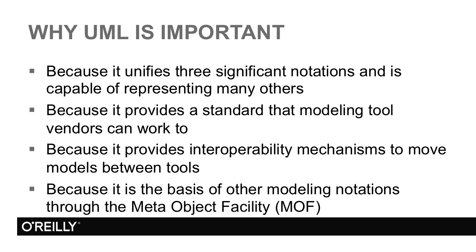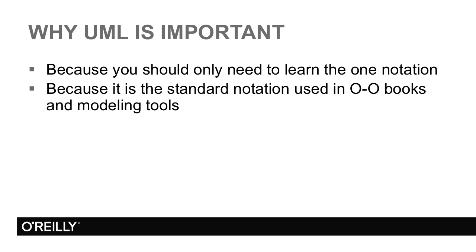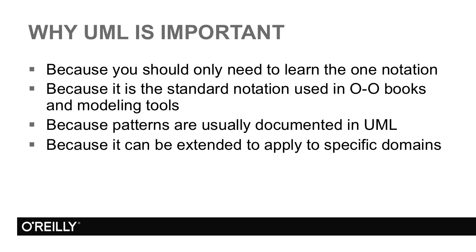UML is used to specify other standards through the Meta Object Facility. From your point of view, it should mean that you only need to learn one notation for object-oriented software development, though there are obviously others for architecture, systems engineering, or business process modelling. You'll also find that it's the standard notation used in books on other software development subjects when authors want to visualise classes or other object-oriented concepts. Design patterns are usually documented in UML, and most books on the subject use it. And finally, you can extend it to cover specific domains through the profile extension mechanism.